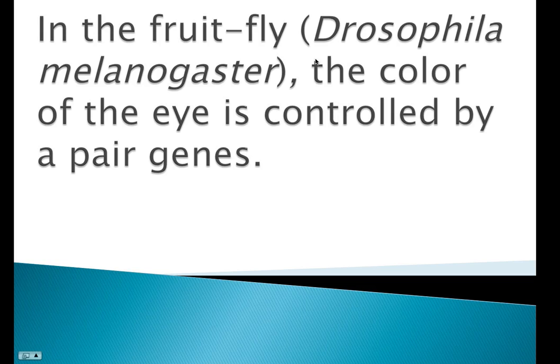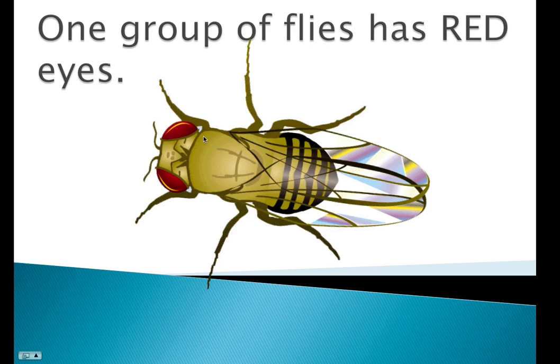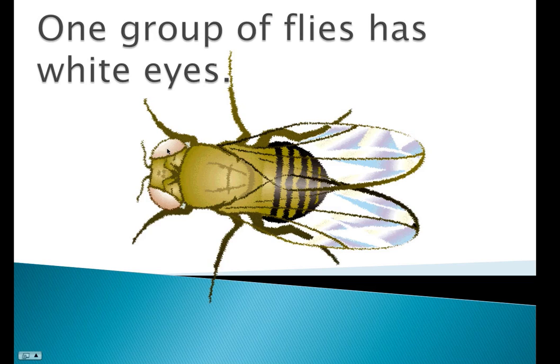Here we have a situation where fruit flies or Drosophila, which has been used a lot in genetic research, has a pair of genes which controls eye color. So we have one phenotype that can have red eyes. The other phenotype has white eyes.